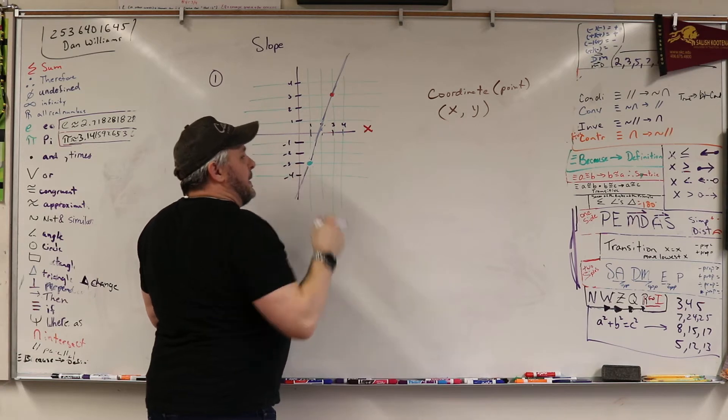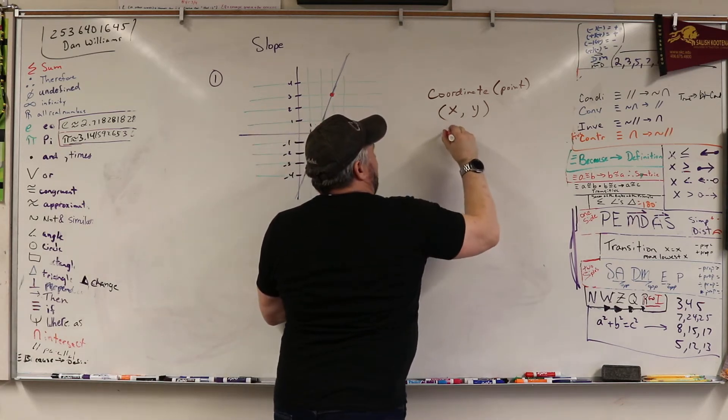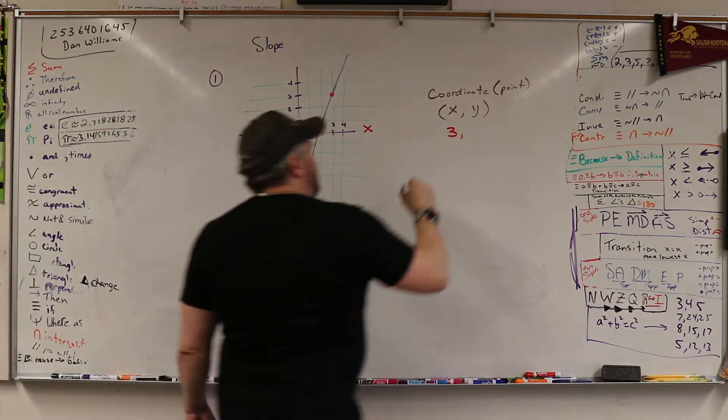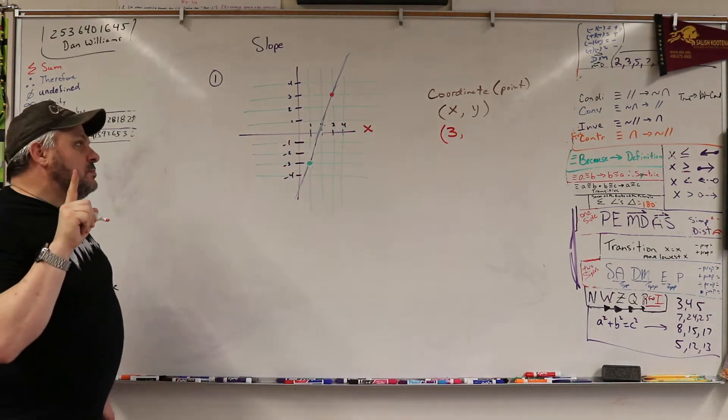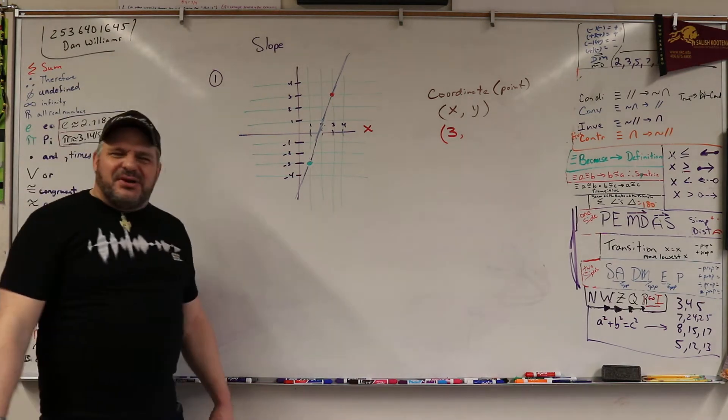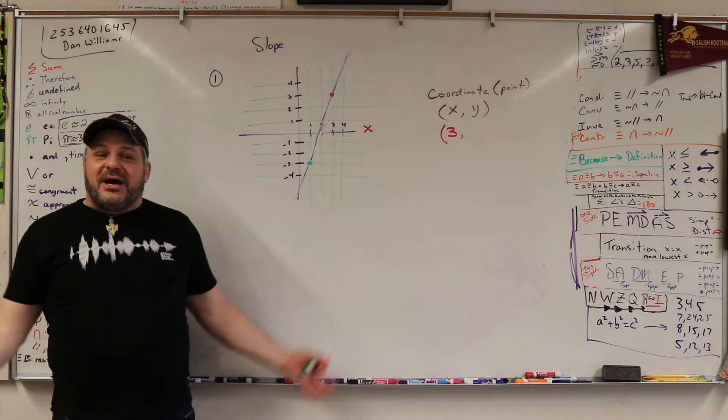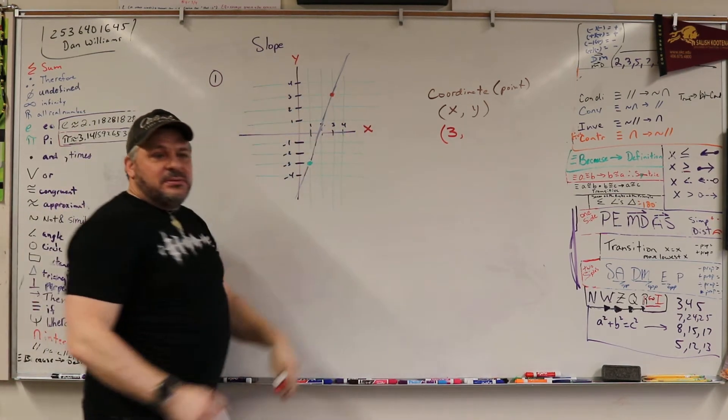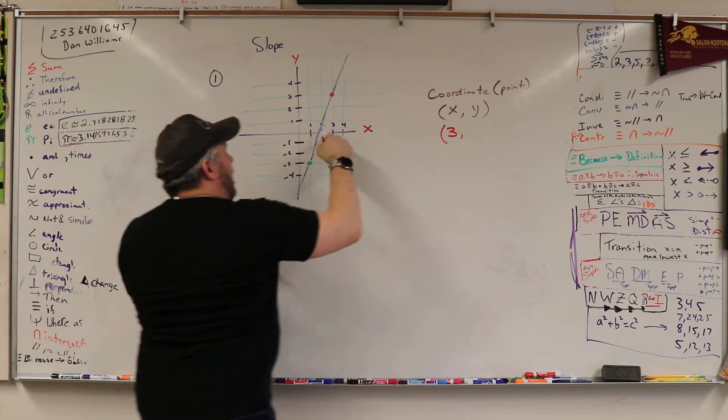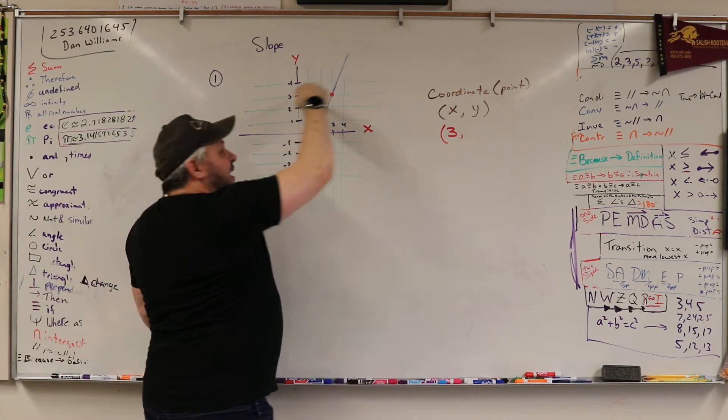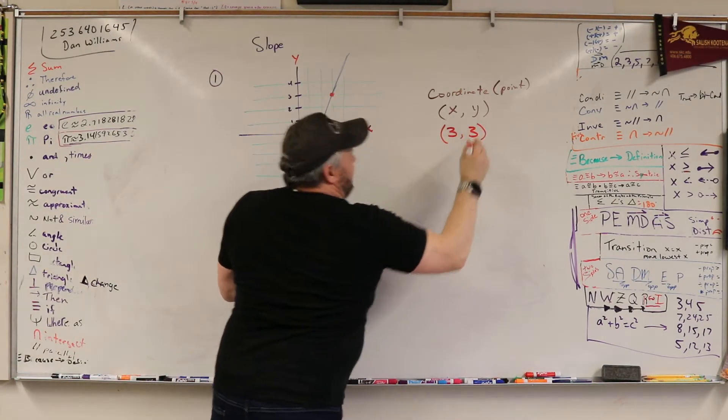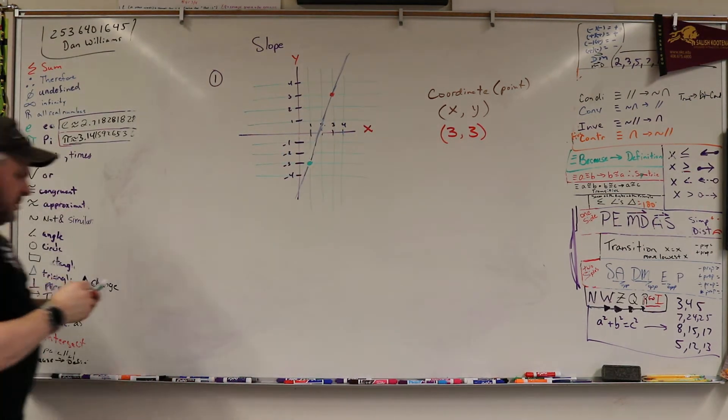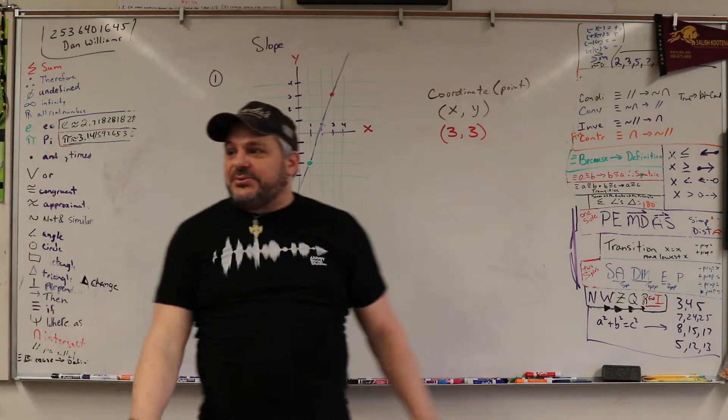Alright, so we got 3. So that is 3 for X. But it's also confusing because it's 3 for what? 3 for the Y value. Because we go up, how much? 3. That makes 3 for the Y. So that's a little bit confusing coordinate, right? But that's the coordinate, so that's what we have to deal with.